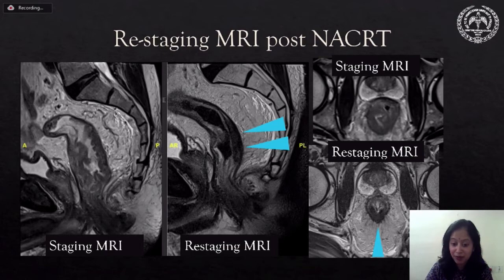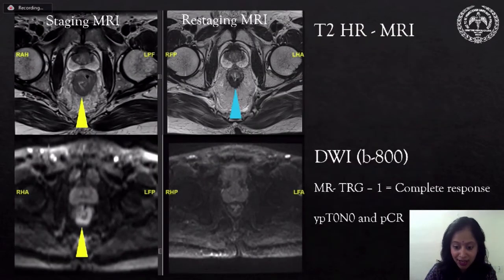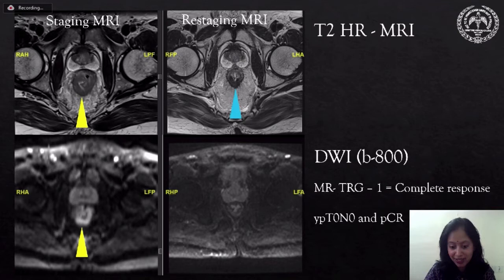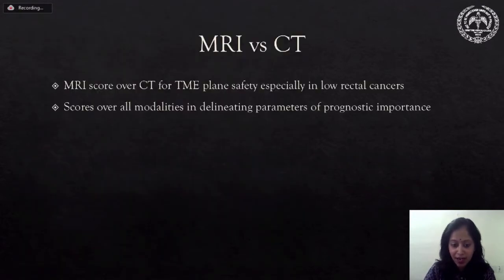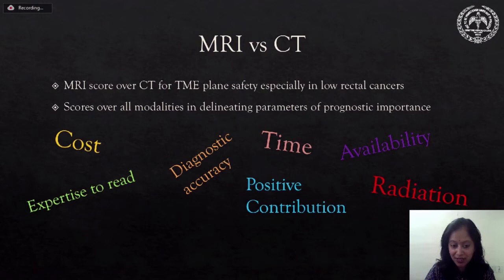One is not sure whether this represents complete response or incomplete response, and that is the role of diffusion-weighted imaging. On pre-treatment diffusion-weighted MRI, the hyperintense growth completely disappears on restaging diffusion-weighted MRI, reported as complete response and later proven on pathology. MRI scores over CT for TME plane safety, especially in low rectal cancer, due to superior soft tissue resolution, and is better than all modalities in delineating parameters of prognostic significance.